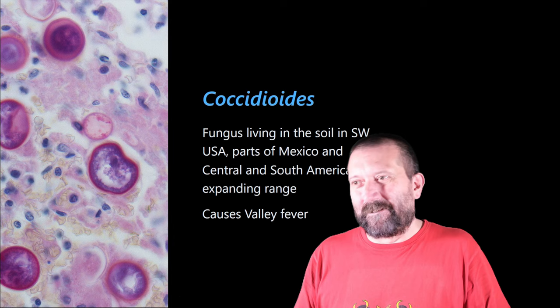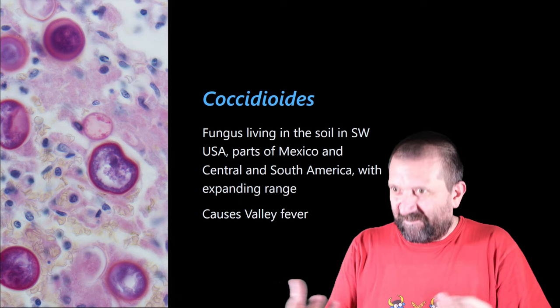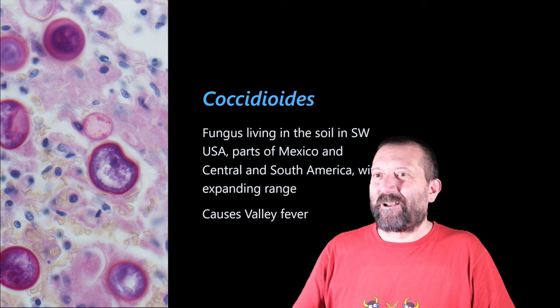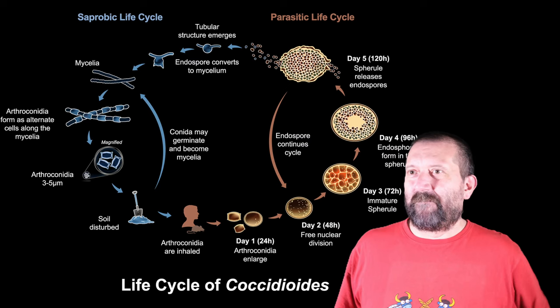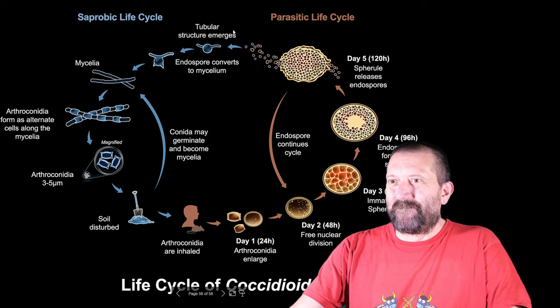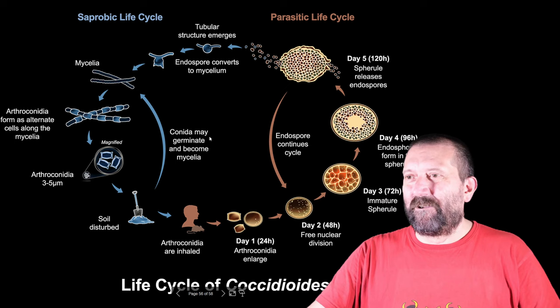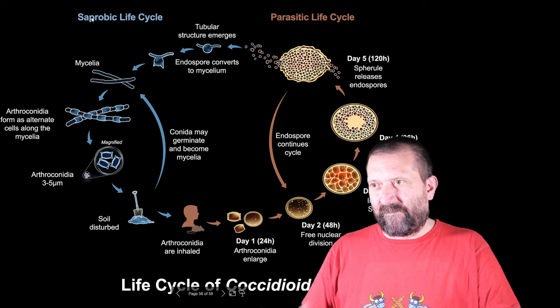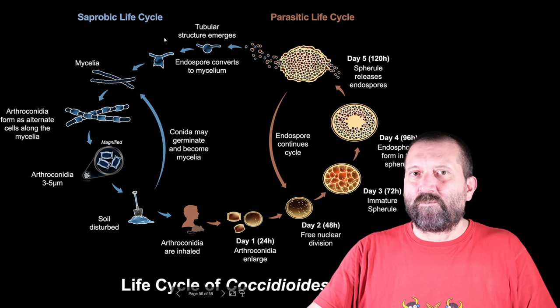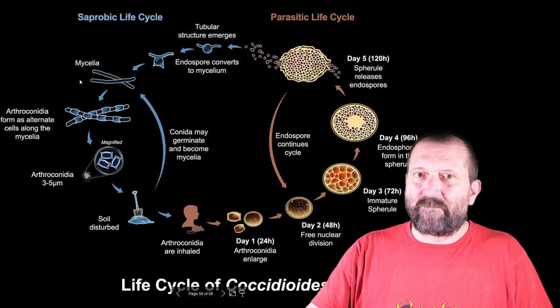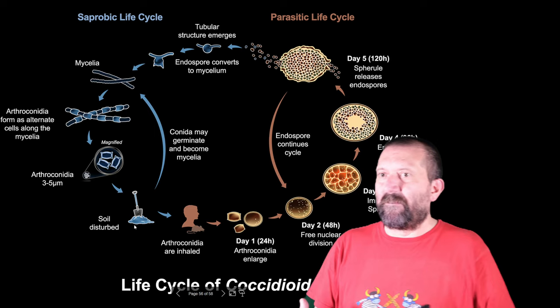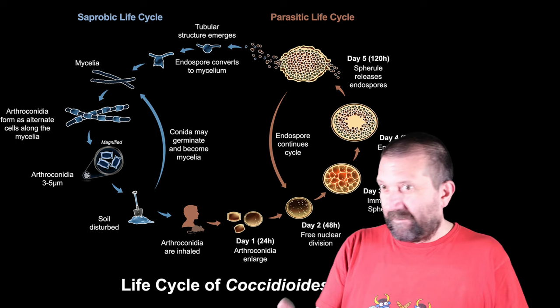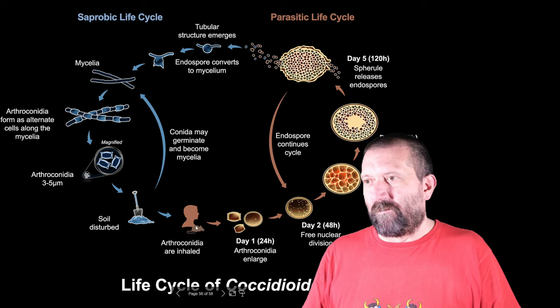Coccidioides have been detected now also in Washington State, so the range has expanded northward, and probably it will reach Canada at some point — it's still in a desert area of Washington State. This is a problem linked to range expansion because of climate change. It causes Valley Fever, and the life cycle is interesting: there's a saprobic phase in the environment where it lives in the soil feeding on dead material, and if the soil is disturbed, humans, rodents, or others might inhale the fungi and go on to develop infection.